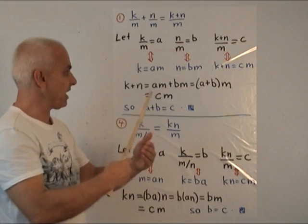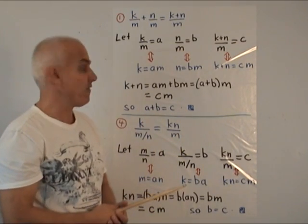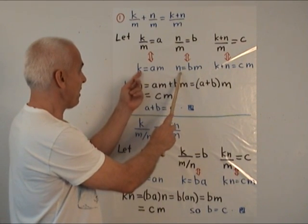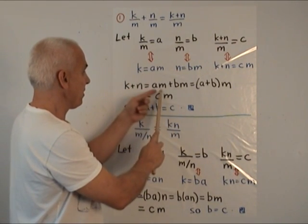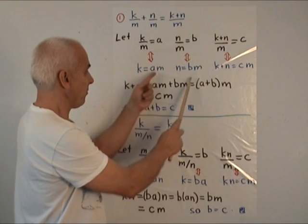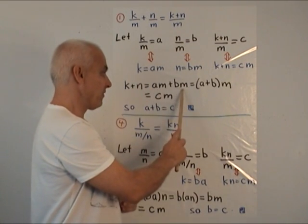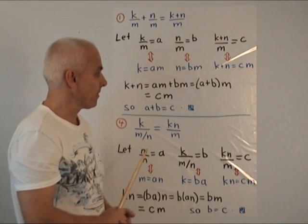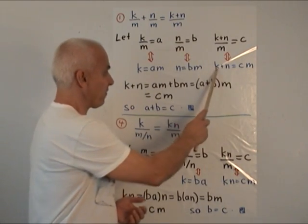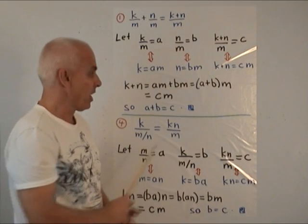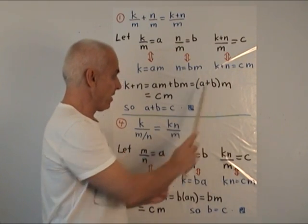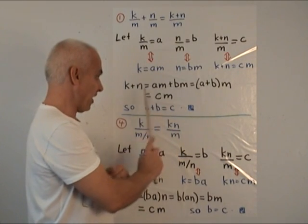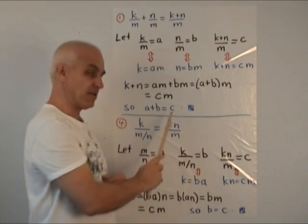So we're just unraveling it, connecting it to the definition via multiplication. And now let's look at k plus n here. k plus n is am plus bm from here. And then the distributive law shows this can be written as a plus b times m. And on the other hand, k plus n from here is c times m. So we have this multiple of m equals this multiple of m. So a plus b times m equals c times m. So that means that a plus b has to equal c.